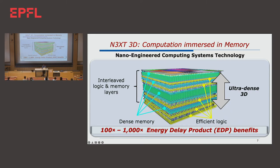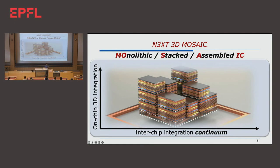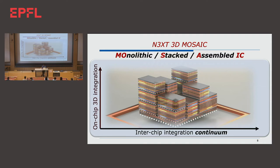The first topic I want to cover is this notion of NEXT 3D Mosaic. NEXT 3D Mosaic draws on NEXT 3D and looks at a two-dimensional space. The Y-axis is what I call on-chip 3D integration — many of these NEXT 3D chips. The X-axis is this notion of inter-chip integration continuum, which means many NEXT 3D chips connected with each other using through-silicon vias, interposers, and so on. For the rest of this presentation, I will be using this notional figure and looking at both axes. Let's start with the Y-axis, on-chip 3D integration.